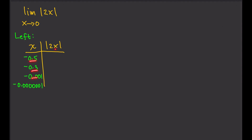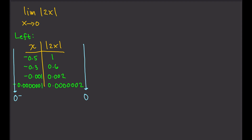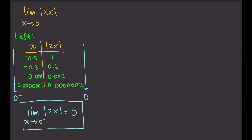Plug in these values to x. For the first one, the absolute value of negative 1 is 1. As x approaches 0 from the left, our f(x) approaches 0. So, the limit of the absolute value of 2x as x approaches 0 from the left equals 0.